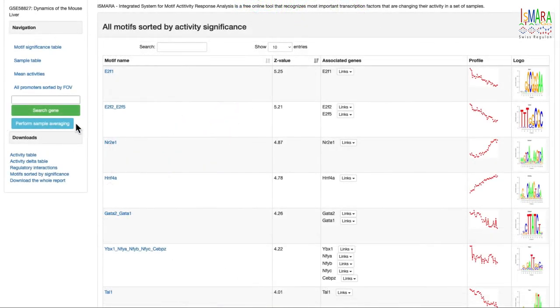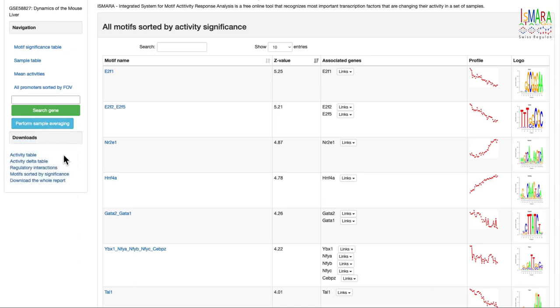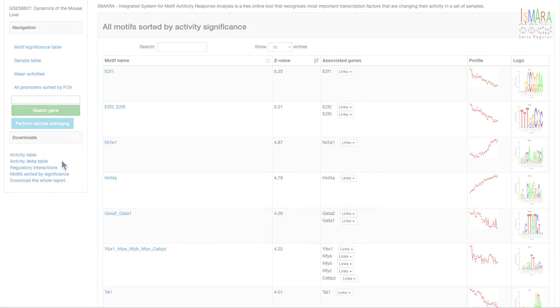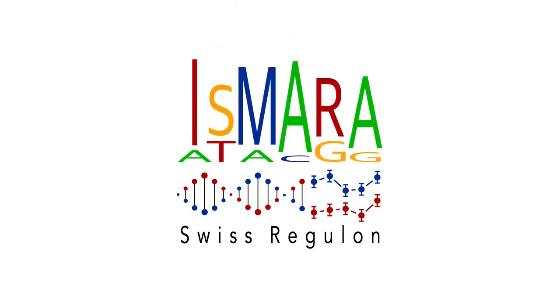Finally, we note that on the left of the main page there is a menu with links to other results sections, a search field to find the results for a specific gene or promoter, a button for performing further downstream analysis, and links to downloadable files with all the results. That is all, thank you for listening, and remember you can always contact us with any questions. Bye!